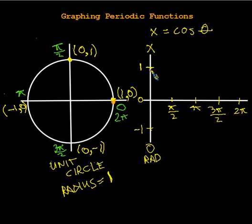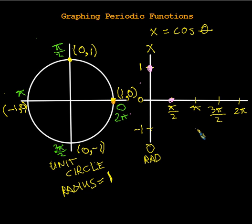So let's do it. At the point 1 comma 0, at 0 radians — x is 1 at 0 radians, so we'll put a dot here. Over here at pi over 2 radians, x is 0, so we come down to here. At pi, x is negative 1, so we come way down here. And then at 3 pi over 2, x is 0, so we put a dot there. And finally at 2 pi, x is 1, so we come right back up there.